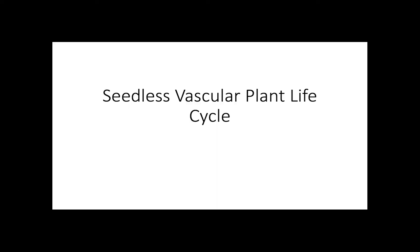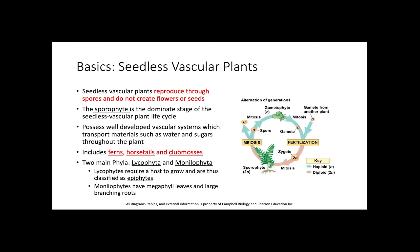In this video we will be discussing the plant life cycles of seedless vascular plants. Seedless vascular plants reproduce via spores and do not create flowers or seeds. The sporophyte is the dominant stage of the seedless vascular plant life cycle, as opposed to the gametophyte. Seedless vascular plants possess well-developed vascular systems to transport materials such as water and sugars throughout the plant. Ferns, horsetails, and club mosses are all examples of seedless vascular plants.